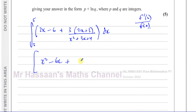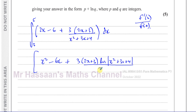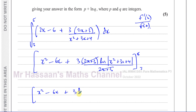The way I like to write this: I'll write 3 times (2x plus 3) times the natural log of the modulus of (x squared plus 3x plus 4), divided by the differential of what's inside — which is 2x plus 3. I like to show my steps here. Then the 2x plus 3 in the numerator cancels with the 2x plus 3 in the denominator. So we're left with x squared minus 6x plus 3 times the natural log of the modulus of (x squared plus 3x plus 4), evaluated between the limits of 5 and 3.